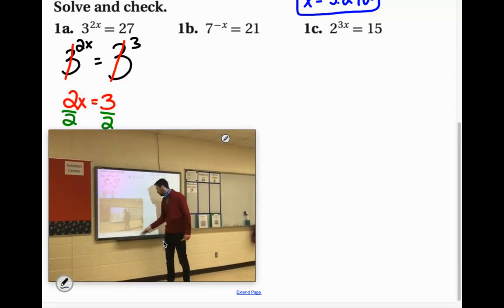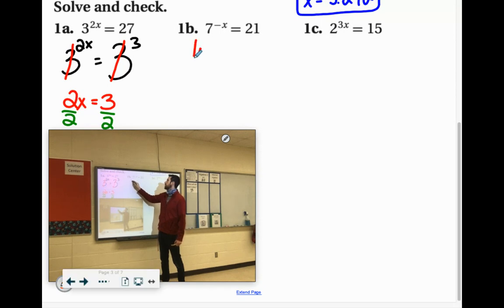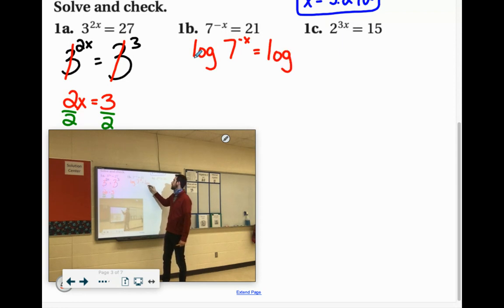So we can log both of these sides here. Let's write it with the log first. So we'll say log 7 to the negative x equals log of 21.